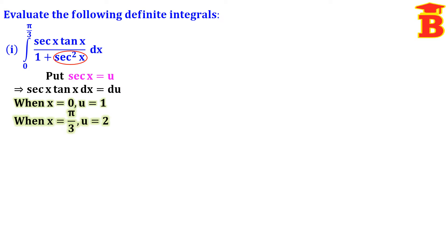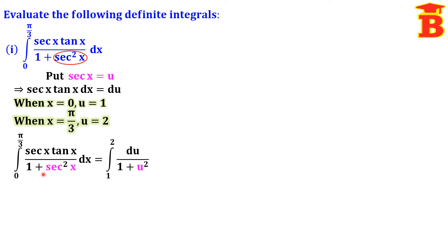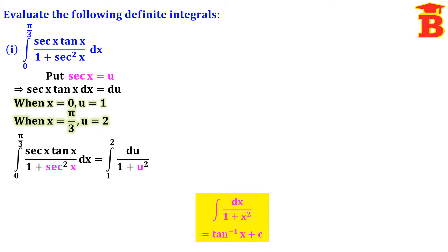Now the given question can be rewritten with lower limit 1 and upper limit 2. Here sec x is u, so the denominator becomes 1 plus u squared, and the numerator is du, since sec x tan x dx is du. This is of the form integral dx divided by 1 plus x squared, for which we have the formula tan inverse of x.